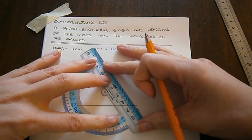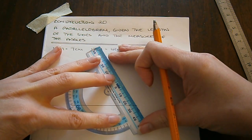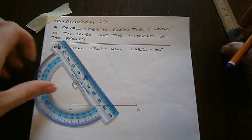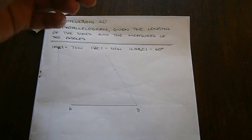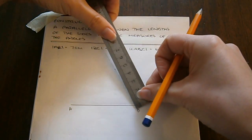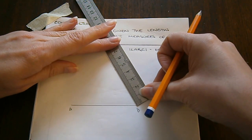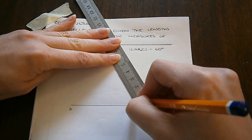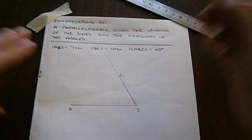And I can join B to this point here. So just draw a light construction line. And along this line, I'm going to measure a length of 4cm to find my point C. Here we go. So we have C here.